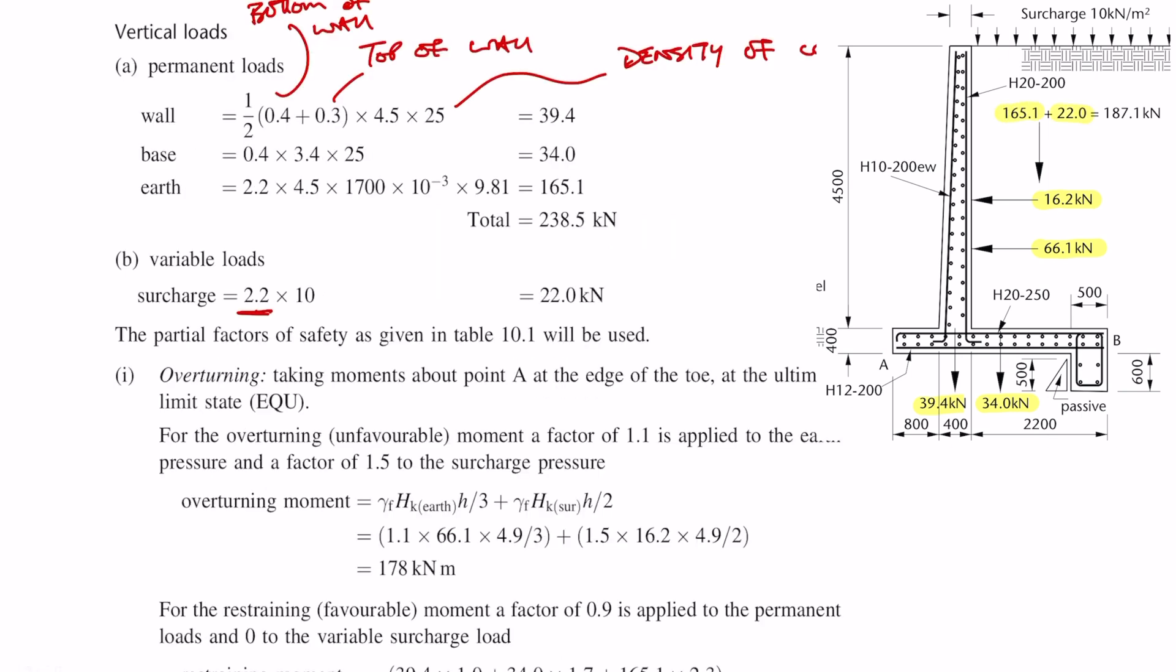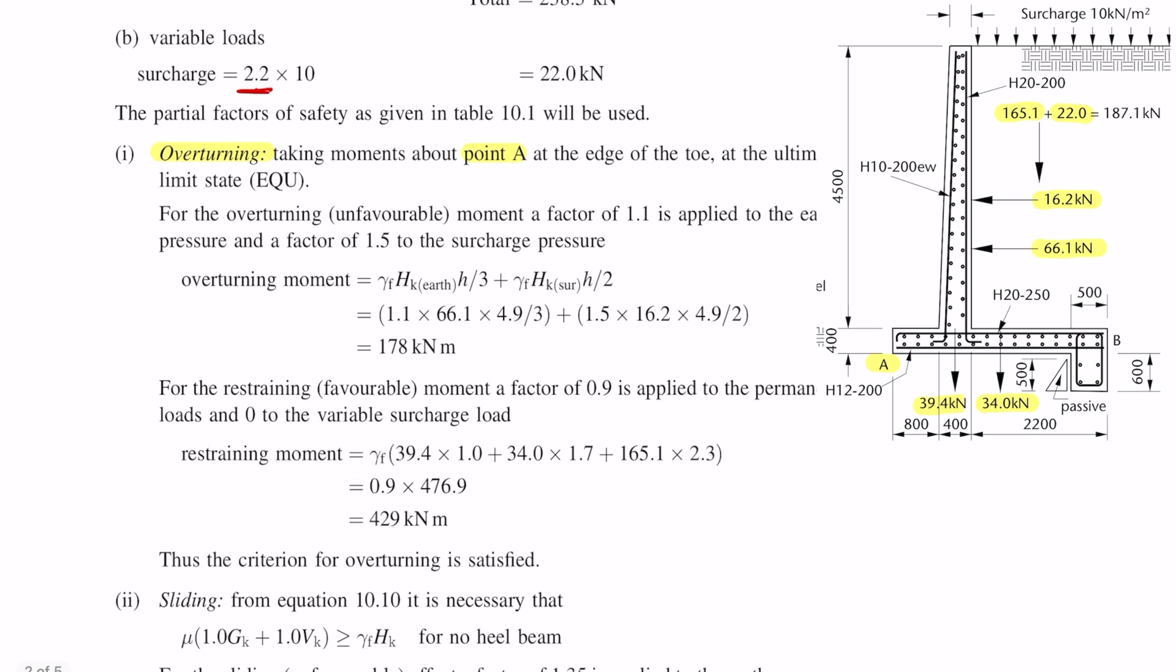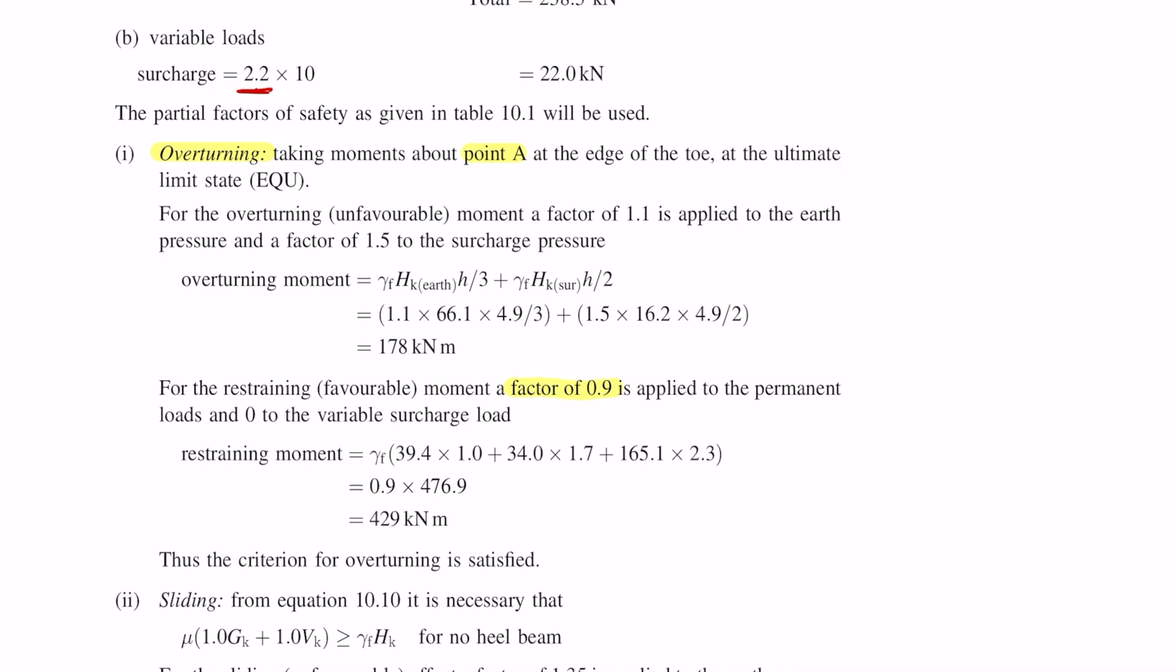The first stability check is the overturning check. We're going to be taking moments about point A at the edge of the toe, which is the front of the retaining wall (the heel is at the rear). When dealing with overturning moments you want to multiply up the unfavorable forces: the dead load factor is 1.1 and the live load factor is 1.5. With the restraining or restoring moment, which is actually a favorable force, we apply a reduction factor of 0.9. We only do this with the dead load and completely ignore the live load.